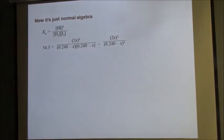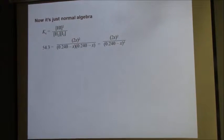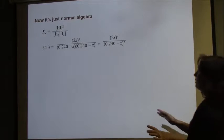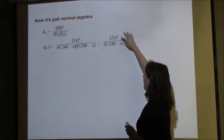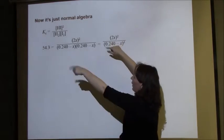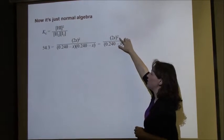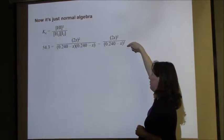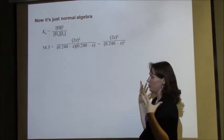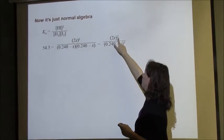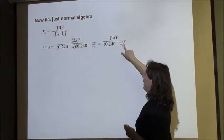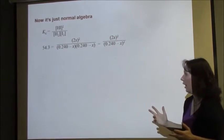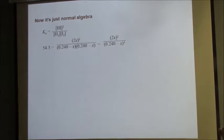So when we plug in our value, 2X quantity squared over 0.24 minus X quantity squared. When both the numerator and denominator are being squared, you can take the square root of both sides. However, if just the numerator is getting squared and the denominator isn't, you've got to do it the long way. This is only a shortcut you can make if both the numerator and denominator are being squared. But since they are, I can take the square root of both sides to solve for X.